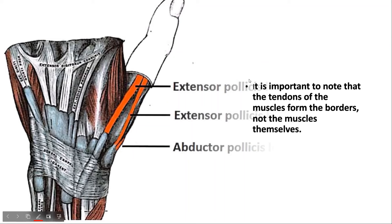Here is a major point to note. The borders of the anatomical snuffbox are formed by the tendons of the muscles — not the muscle bellies themselves. Three tendons are involved: extensor pollicis longus, extensor pollicis brevis, and abductor pollicis longus. You can see that it is the tendons that form the borders.